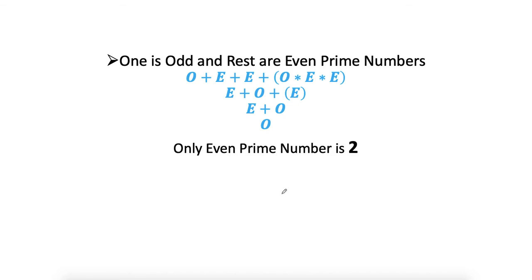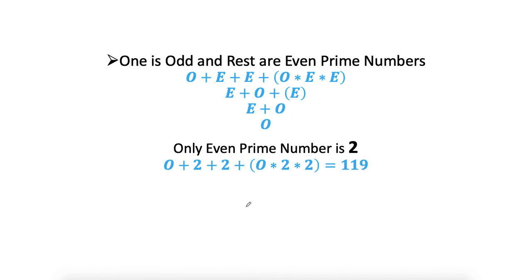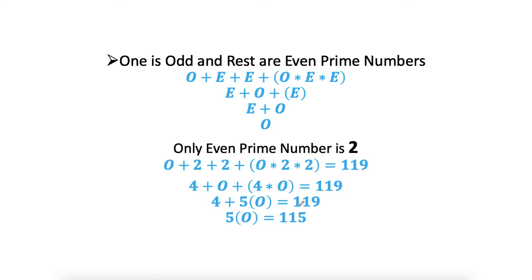Since the only even prime number is 2, and we need two evens and one odd, both even values must be 2. Let's call the odd prime number o. So the equation becomes: o plus 2 plus 2 plus o times 2 times 2 equals 119. Simplifying: o plus 4 plus 4o equals 119, giving 5o plus 4 equals 119, then 5o equals 115, so the odd prime number o equals 23.